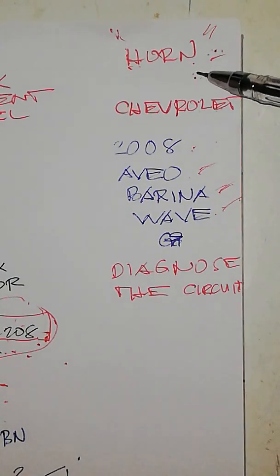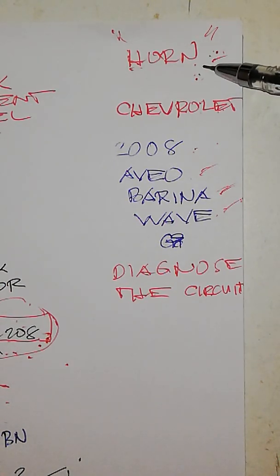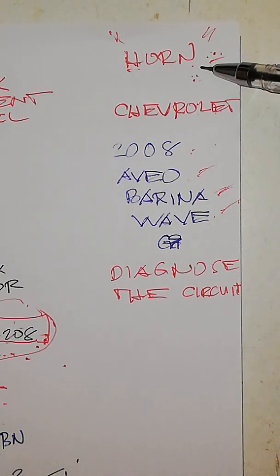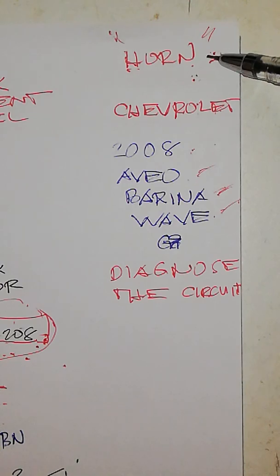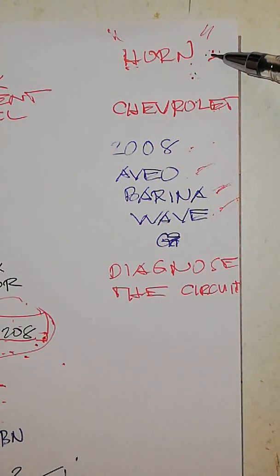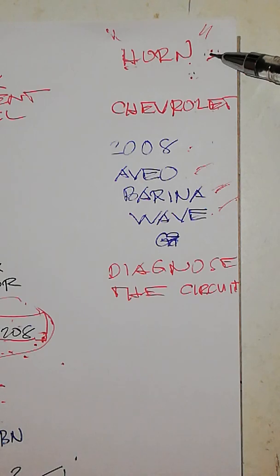Hello guys, today our topic is about the horn. The concern is the horn is not working. The horn component is new and the relay is new, but still not working. So our topic for today is how to diagnose. We are using Chevrolet 2008 Aveo, Barina, and Wave circuit diagram.